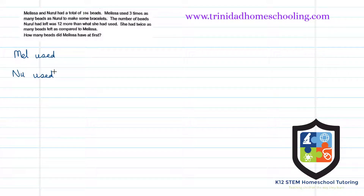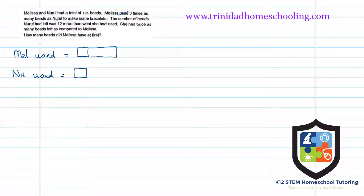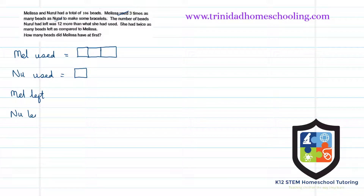Let's put in some figures. Melissa used and Neural used — so we have those two columns. Melissa used three times as many beads as Neural, so whatever Neural used, Melissa used three times that same amount. Then it starts to talk about what they had left, so let's also set up Melissa left and Neural left.